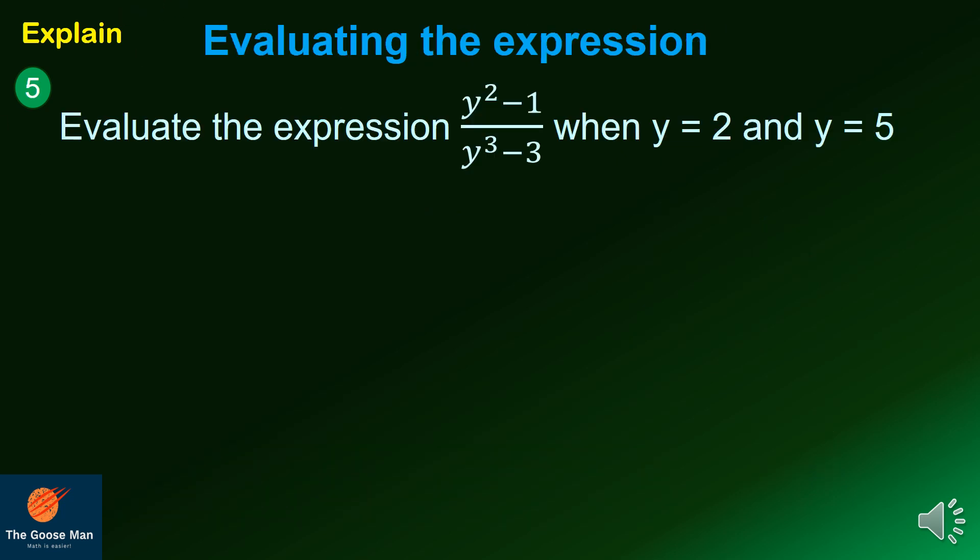You can verify that if the excluded value or values is substituted in the expression, it always results in division by zero. However, there are some values that will make the expression defined. This process is called evaluating the expression. Let us consider example number 5: evaluate y squared minus 1 all over y cubed minus 3 when y equals 2 and when y equals 5.